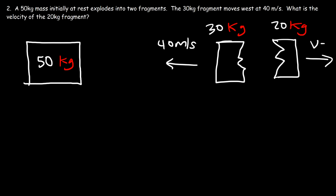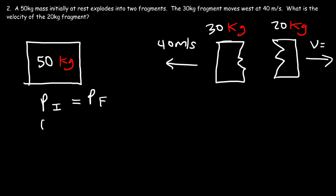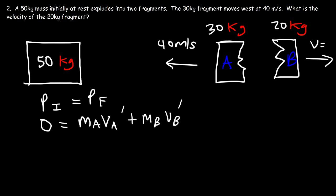Our goal is to find the velocity of the other fragment. We know it must move east, so its velocity has to be positive. Once again, total initial momentum equals total final momentum. Before the explosion the object was at rest, so initial momentum is zero. Final momentum is the momentum of fragment A plus fragment B. Just like before, we get the equation: negative MA·VA' equals MB·VB'.